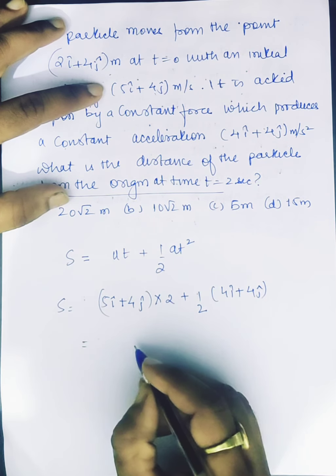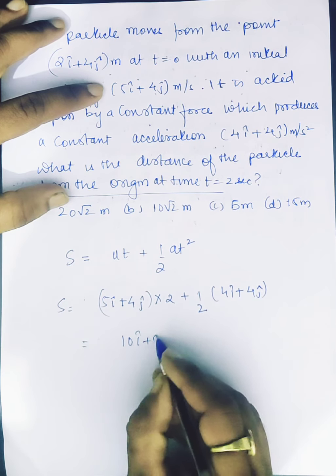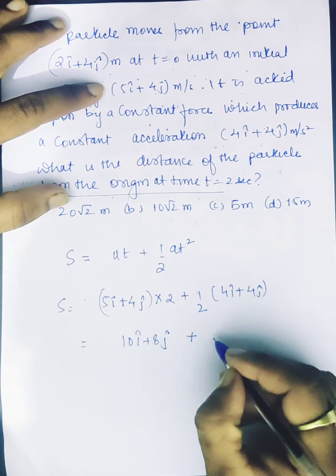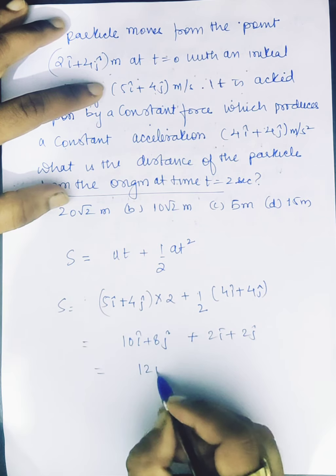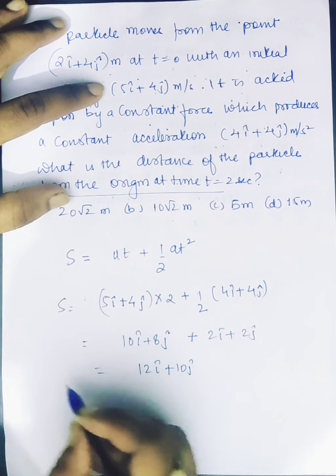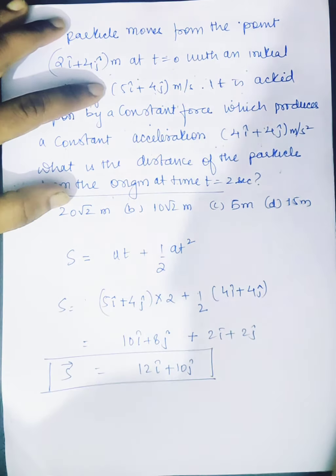How much time is given here? 10i plus 8j plus 2i plus 2j. That is we get 12i plus 10j. That is the displacement of particle due to this acceleration.